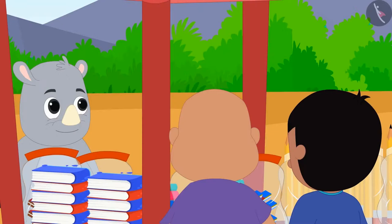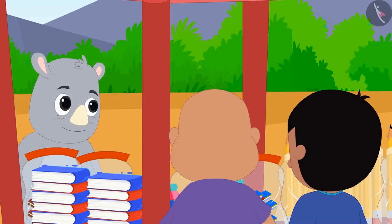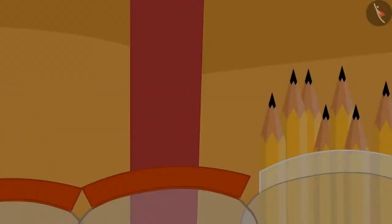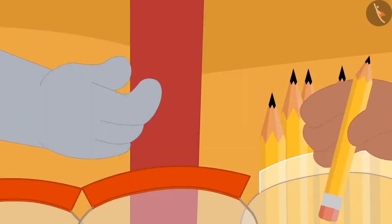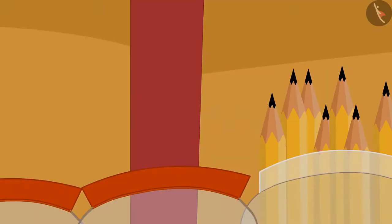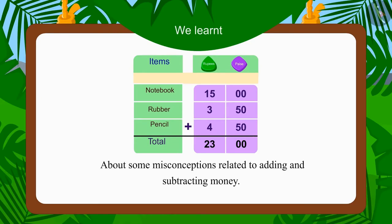Gaggu was happy to see the honesty of those children and gave them 1 pencil each for free. In this video, we saw some common mistakes related to adding and subtracting money.